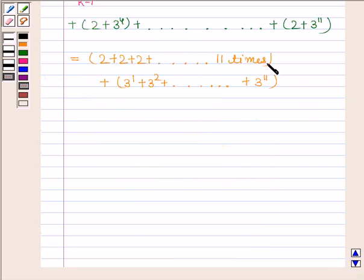Since 2 appears 11 times, so 2 plus 2 plus 2 till 11 times is equal to 22.